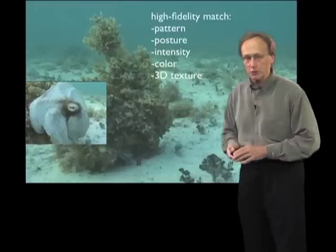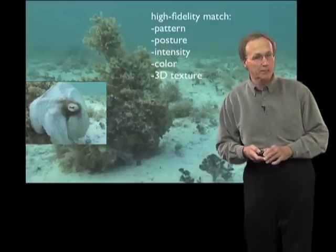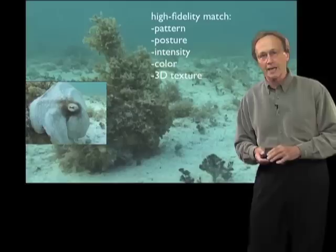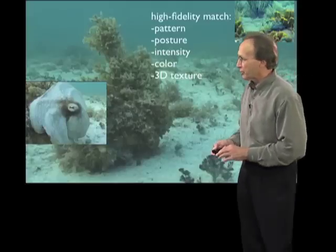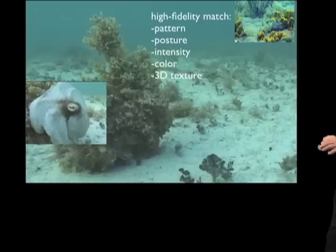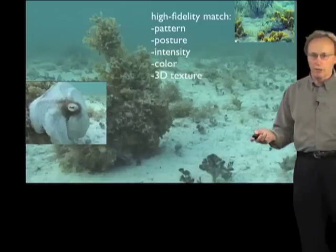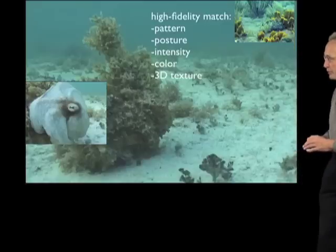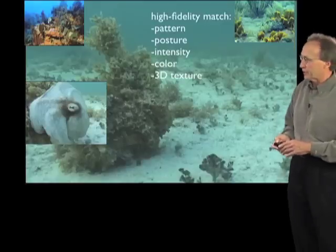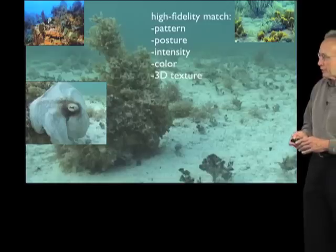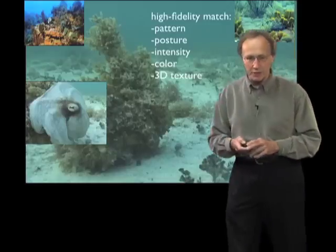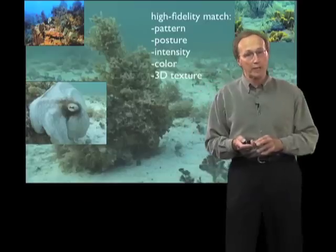A lot of people think this is what camouflage is — looking exactly like the background. But I want to point out a few features that would bring that idea into question. This octopus can go anywhere, on a coral reef or a kelp forest, and camouflage. It doesn't matter if it's a fully developed coral reef or anything in between. These animals can go where they want and develop the camouflage needed for that particular background.